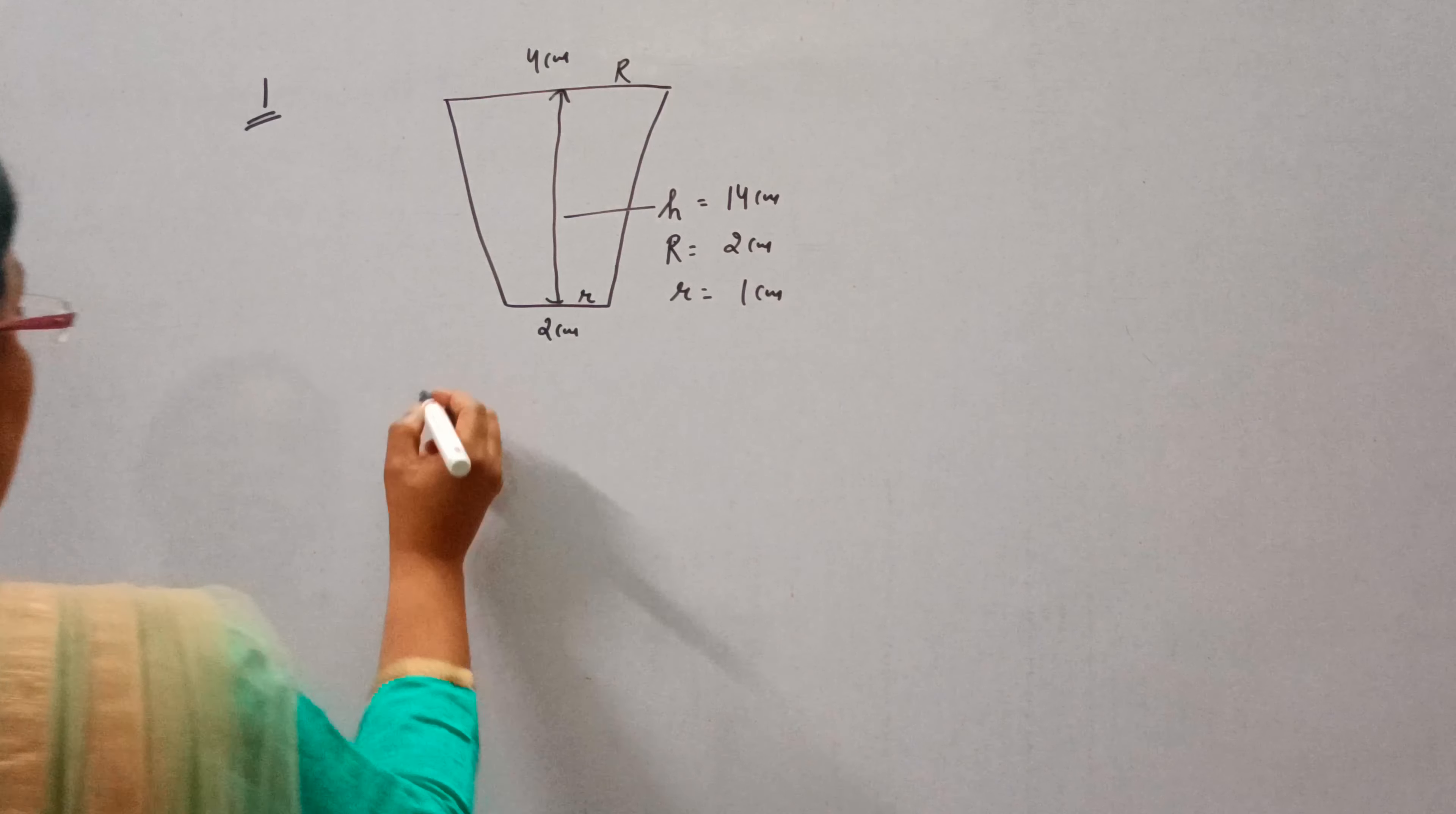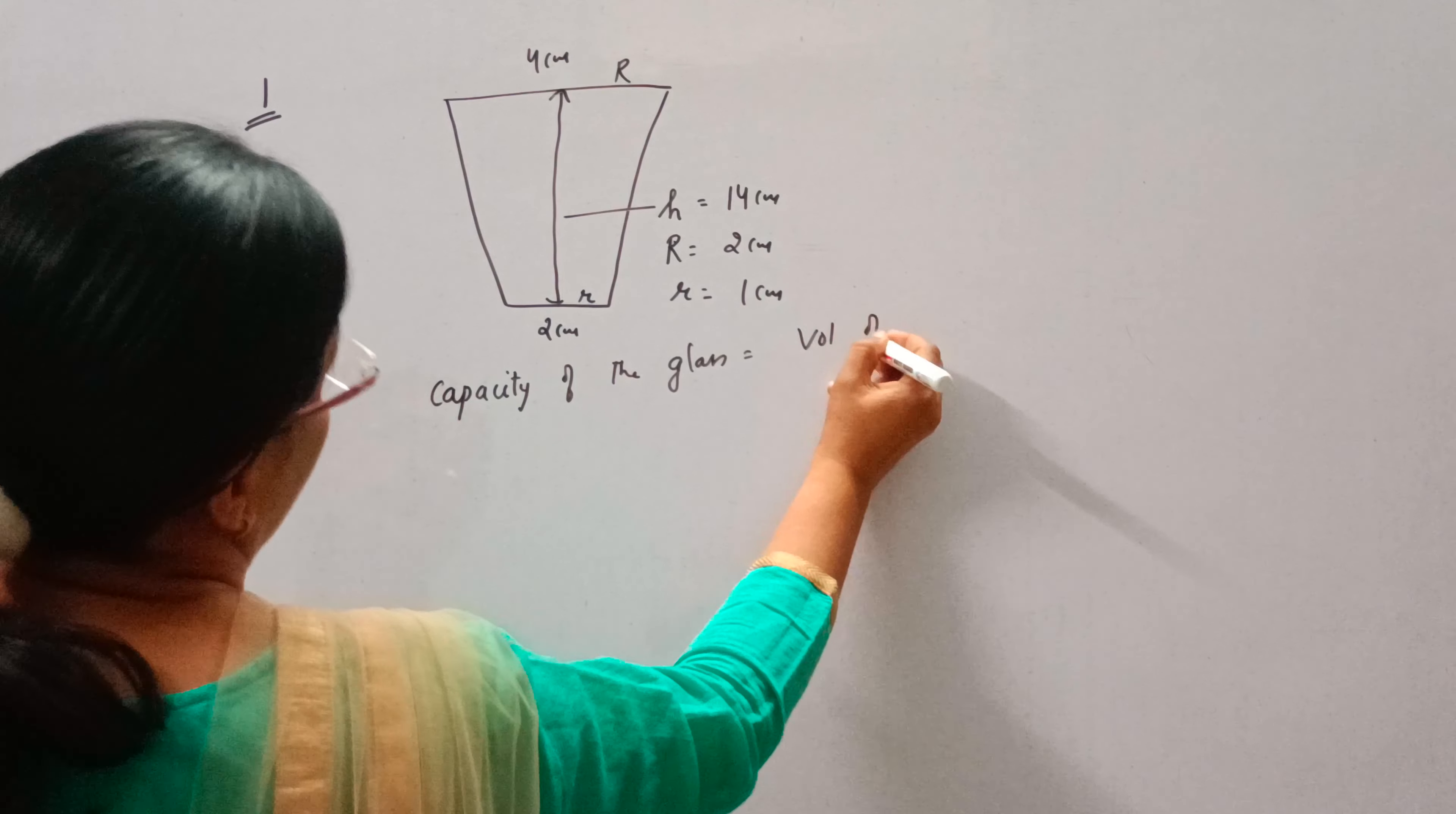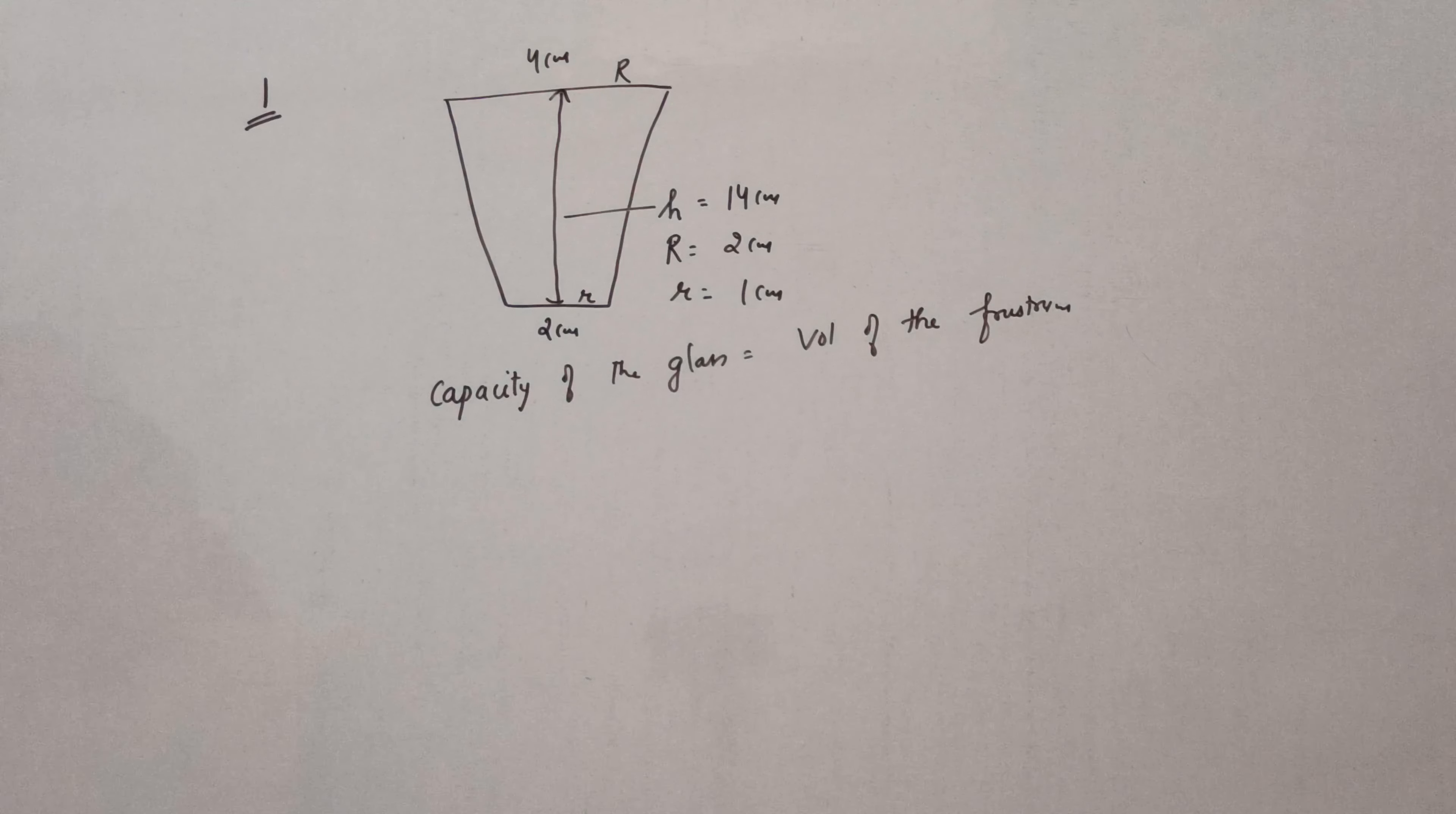Find the capacity of the glass. Capacity of the glass means volume of this frustum. So capacity of the glass is equal to volume of the frustum because the glass is in the shape of a frustum.